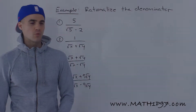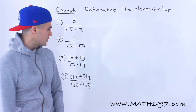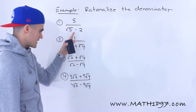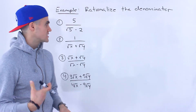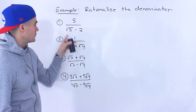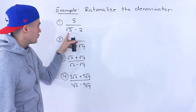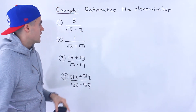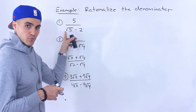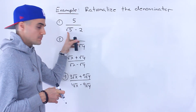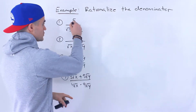What's up everyone? Patrick here. Welcome back. In this video what we're going to do is take these four expressions here and we're going to rationalize the denominator. Starting with number one we got five over root five minus two. To rationalize means we're going to get rid of this radical in the denominator in each of these expressions.